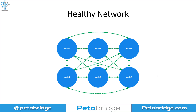This is what an Akka.NET cluster looks like. Now you can have a split brain with any network type — you could have it with an edge network, which is another type of peer-to-peer network, or even a hierarchical client-server network could potentially have some. The larger and more complex your network is, the greater the surface area for potential split brains.